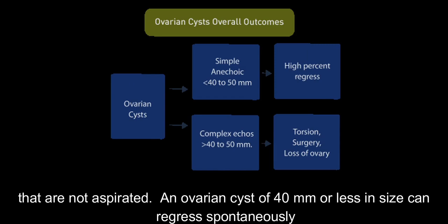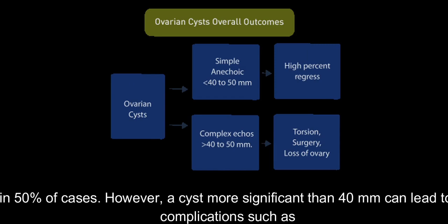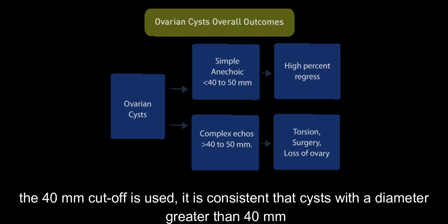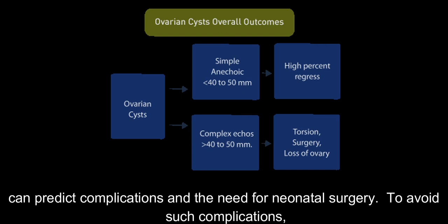An ovarian cyst of 40 mm or less in size can regress spontaneously in 50% of cases. However, a cyst more significant than 40 mm can lead to complications such as cystectomy, torsion, or cystic hemorrhage. Regardless of whether the 50 mm cutoff or the 40 mm cutoff is used, it is consistent that cysts with a diameter greater than 40 mm can predict complications and the need for neonatal surgery.